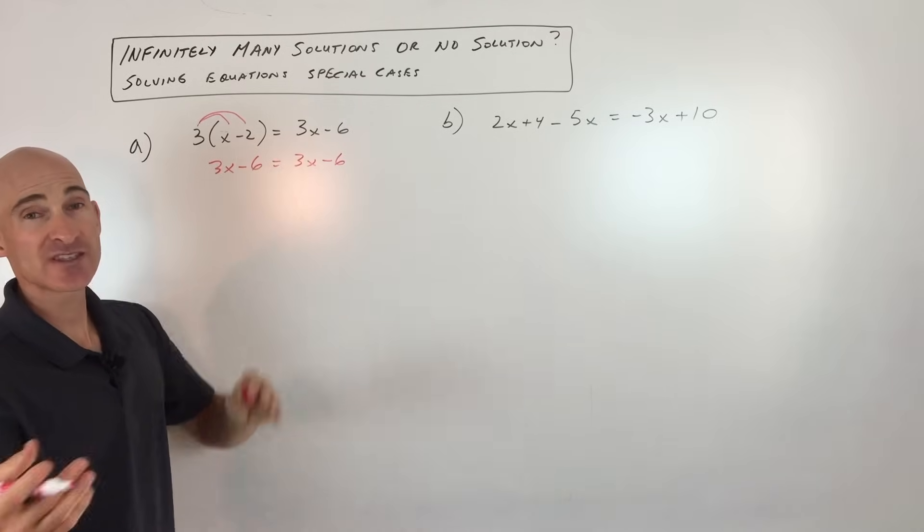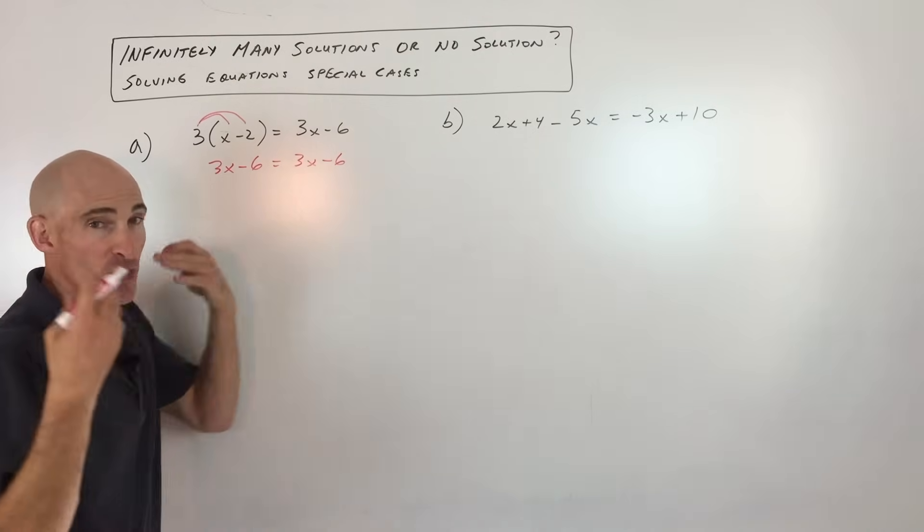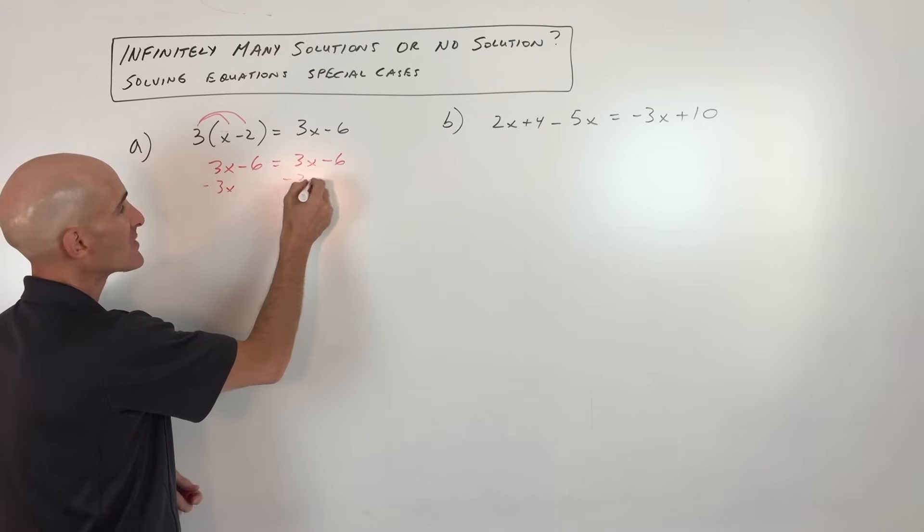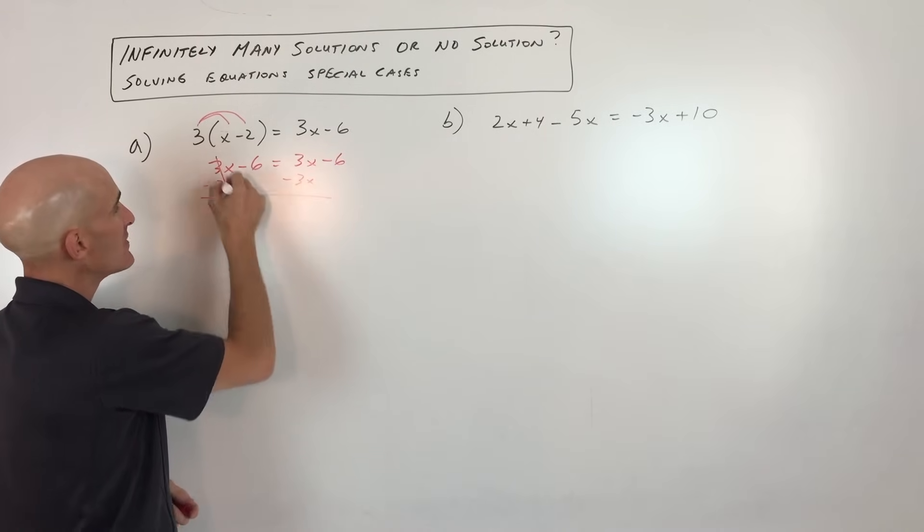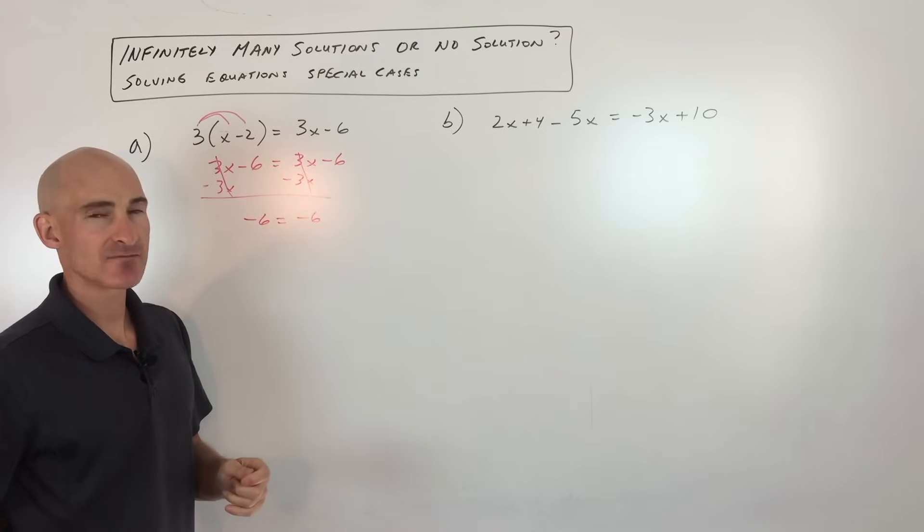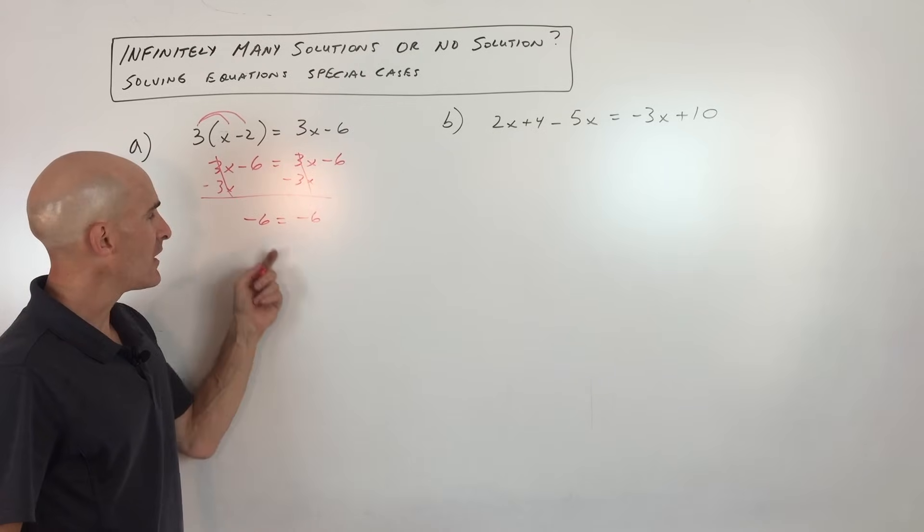Now, this one was kind of obvious, but let's say you didn't notice at first and just were going through the motions solving the equation. Maybe you subtracted 3x from both sides and then you said okay, these cancel. Oh wait a second, what happened to my variable? It just kind of disappeared, right?